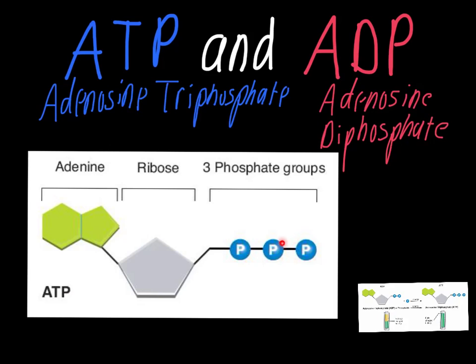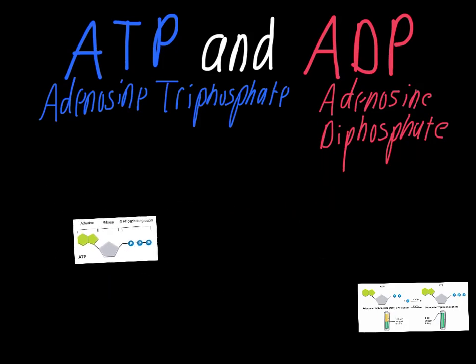The energy is actually between these last two phosphate bonds. So when an ATP molecule is used, this last phosphate is actually broken off, and the energy in that bond is what's used to power whatever process ATP is being used for in the cell. It's used for things like active transport — pretty much any time the cell needs energy, it's using ATP for it.